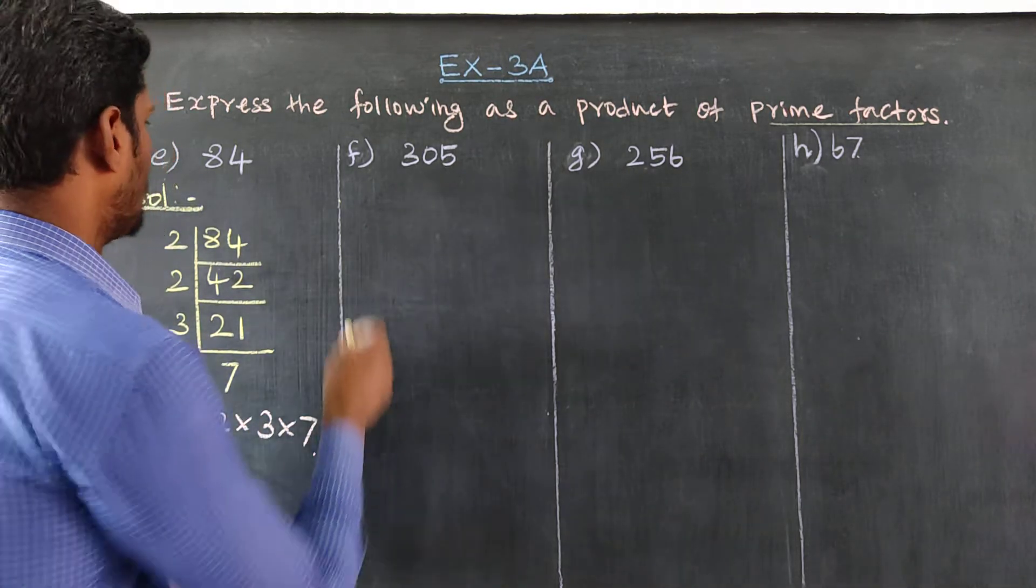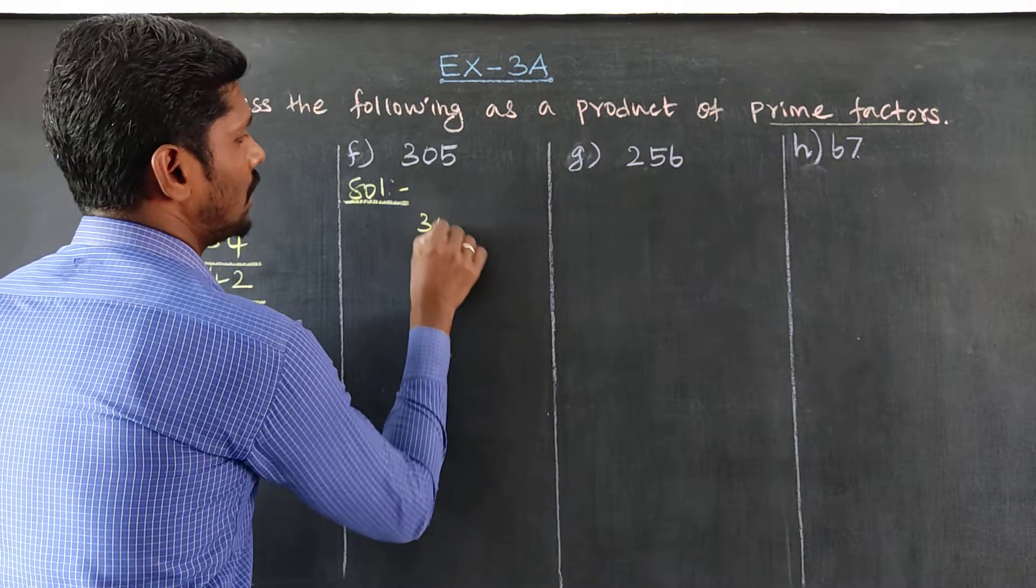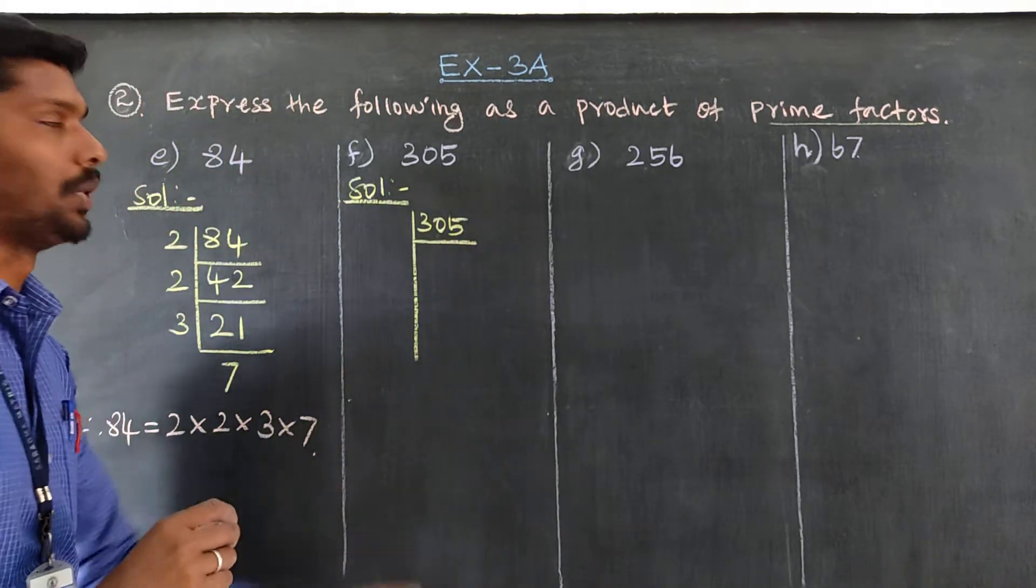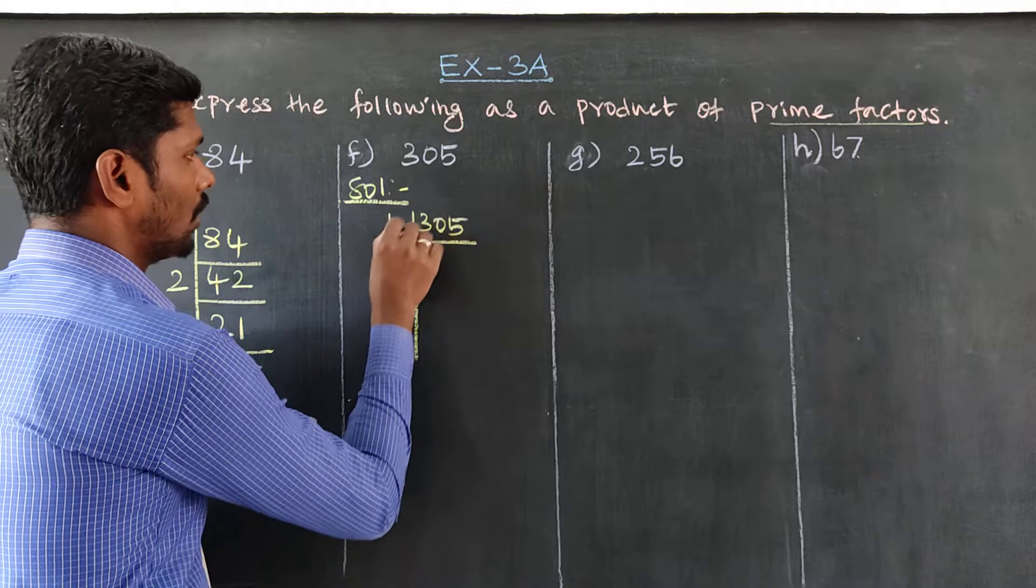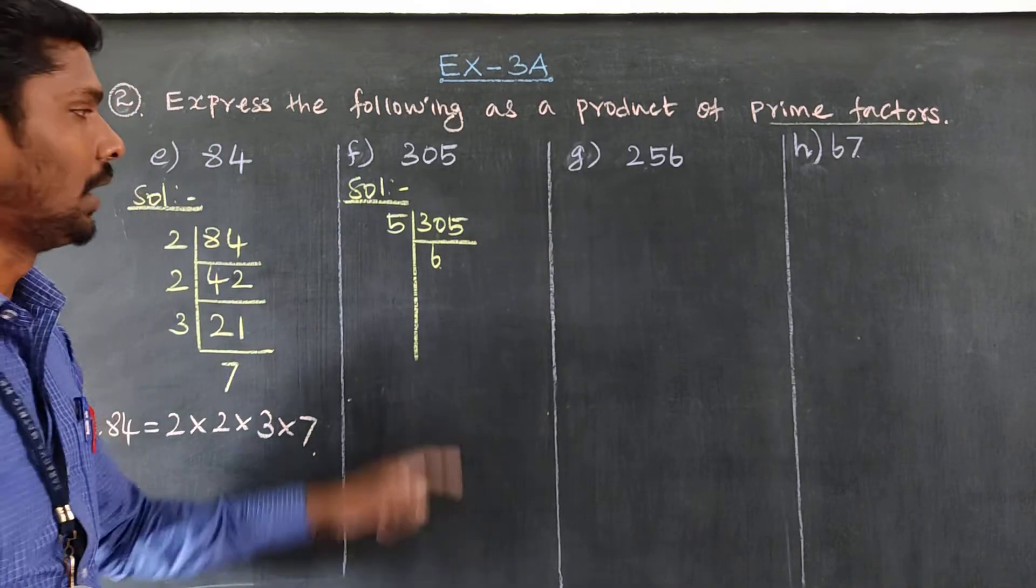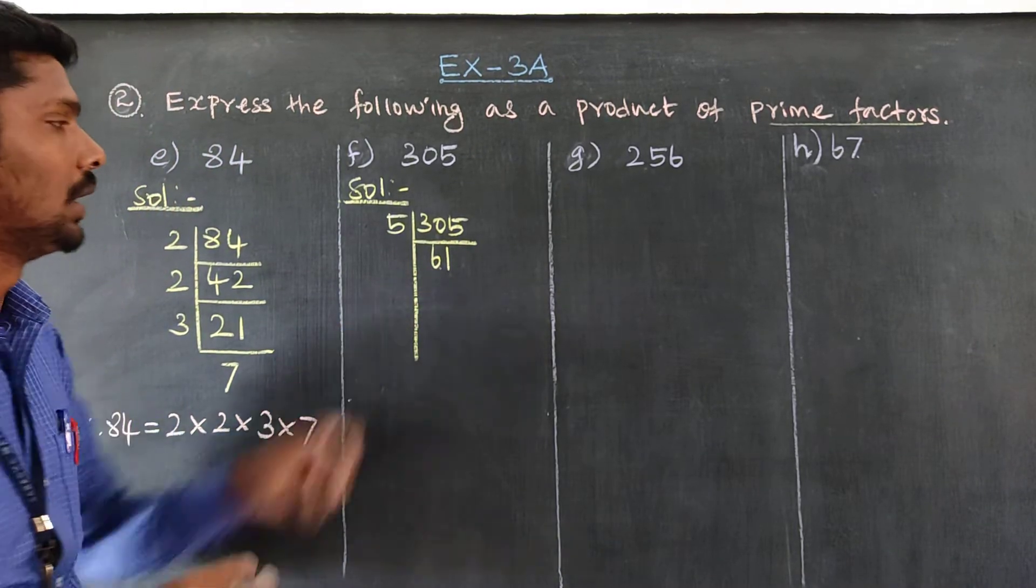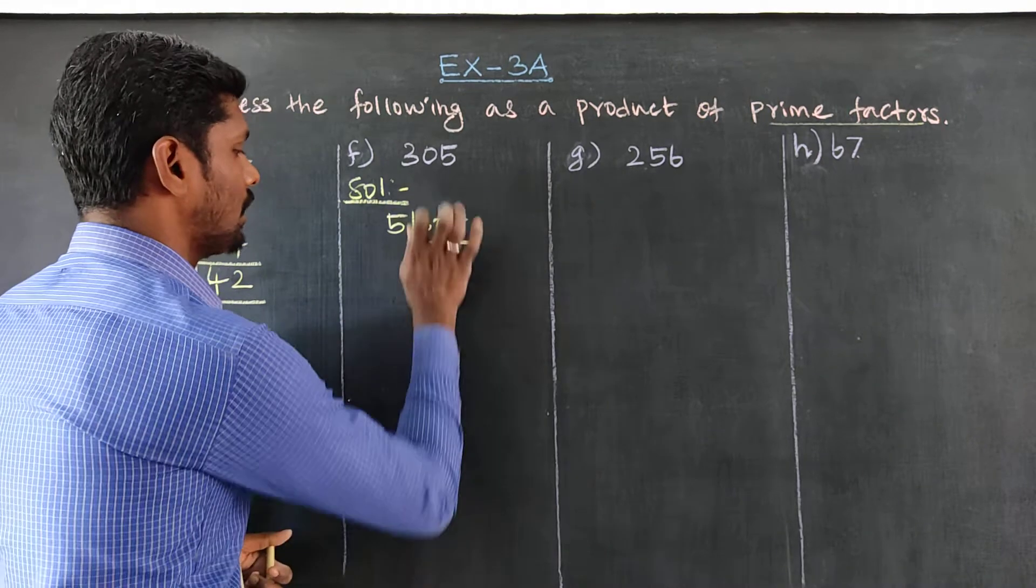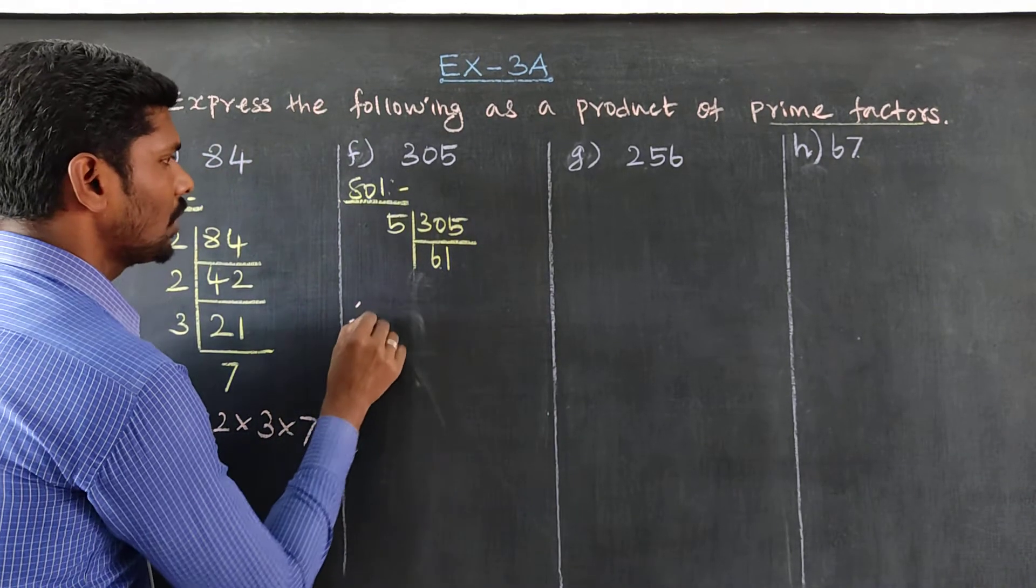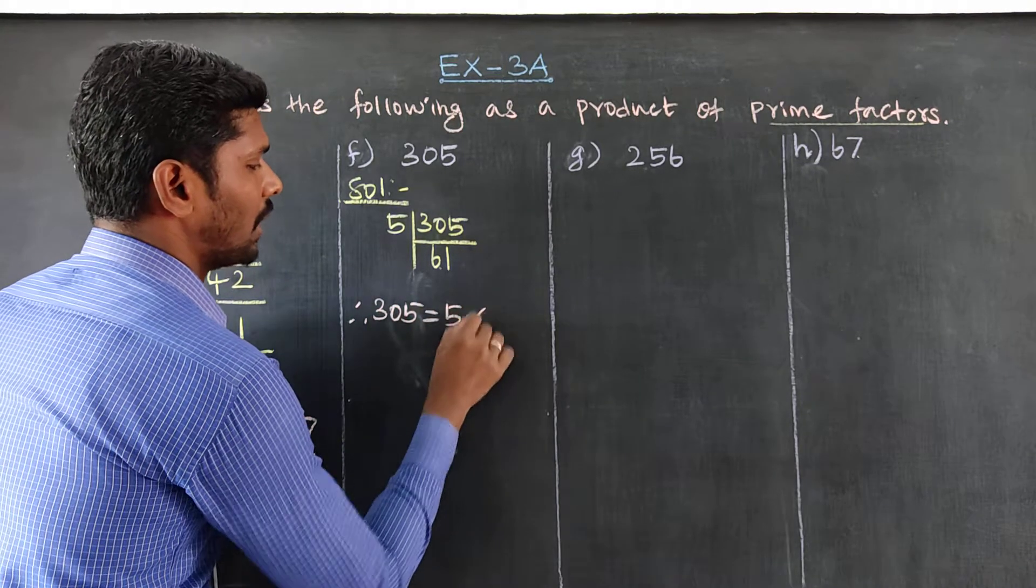Next, 305. Solution: 305 divided by 5 equals 61. Since 61 is a prime number, the prime factors of 305 are: 305 = 5 × 61.